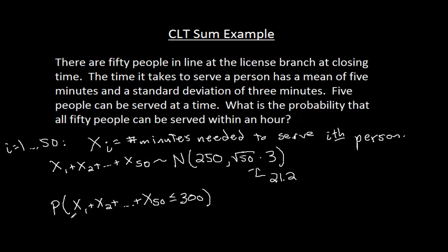We have a distribution for this sum and we're going to find the probability that it's less than or equal to this value. Since it's a normal distribution, we will use a z-score. So the z-score of 300 for this normal distribution is 300 minus the mean 250, divided by the standard deviation, the square root of 50 times 3. That z-score, if you plug it into your calculator, comes out to about 2.36.